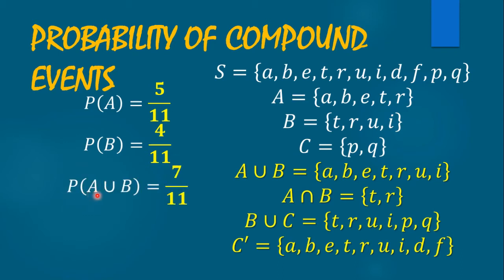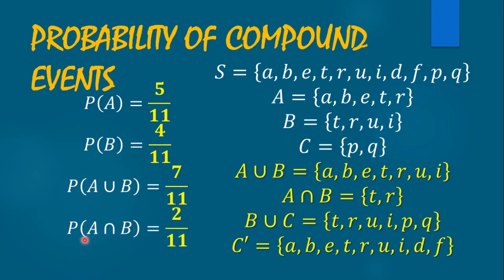For the probability of A union B, we have outcomes A, B, E, T, R, U, I — seven outcomes over 11. So we have 7 over 11. Then for the probability of A intersection B, the common outcomes between A and B are T and R, giving us two outcomes. So the probability of A intersection B is 2 over 11.